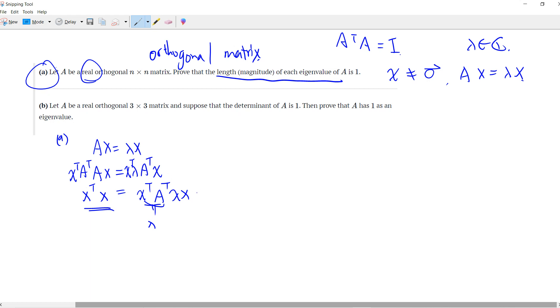So this is lambda times lambda bar times x transpose x. Basically, the absolute magnitude of lambda squared times x transpose x. So we just use this. This is the norm of x, which is defined to be x transpose x.